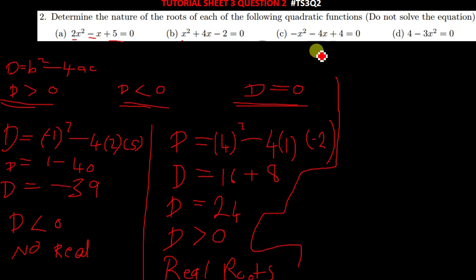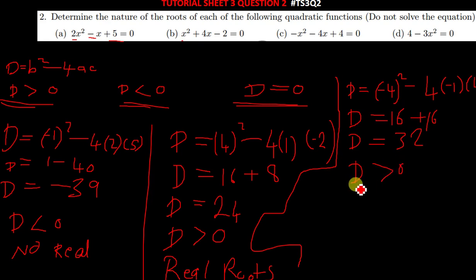And then c, we have our D being equal to, so my b squared there will be negative 4 squared minus 4. My a is negative 1, and then my c is 4. When you solve this, you are supposed to get 16, and then this is again positive 16. So D is also positive here, which is positive 32, so D is greater than 0. This is simply telling us that this has real roots as well, or it has two distinct real roots.